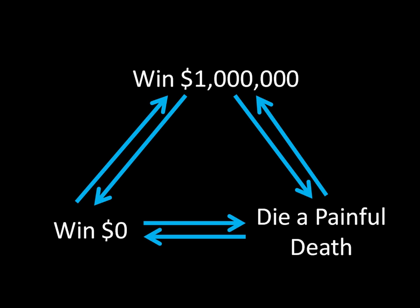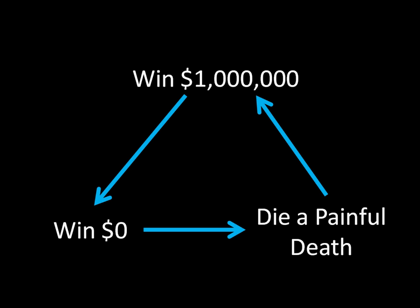What transitivity rules out is something called a preference cycle. This individual prefers winning a million dollars to winning zero dollars, winning zero dollars to dying a painful death, and dying a painful death to winning a million dollars. If you ask this individual what his most preferred outcome is, he can't give a sensible answer — no outcome can be the favorite because each is dominated by another. This does not make any sense, and that's what transitivity is trying to rule out.